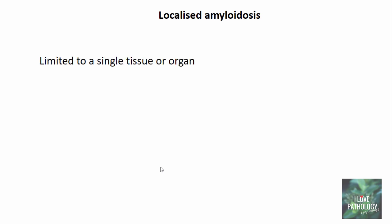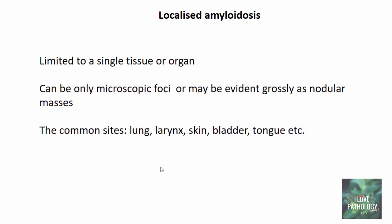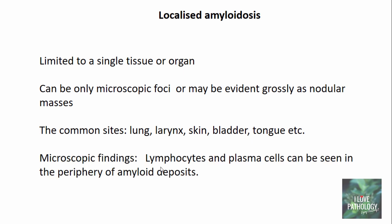Localized amyloidosis means the amyloid deposit is limited to a single tissue or organ. It can be microscopic foci or evident grossly as nodular masses. The most common sites are the lung, larynx, skin, bladder, and tongue. Microscopically, lymphocytes and plasma cells are found in the periphery of these amyloid deposits. In some cases the amyloid can contain AL type protein.